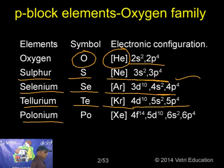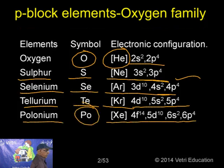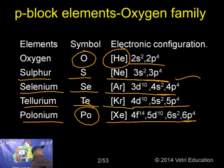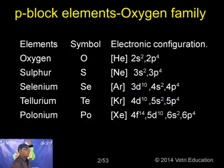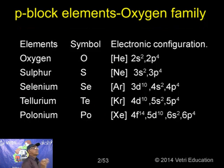Polonium has symbol Po with electronic configuration Xenon plus 4f¹⁴ 5d¹⁰ 6s² 6p⁴. So all these members have the outermost electronic configuration ns² np⁴. This is the most important information to keep in mind.